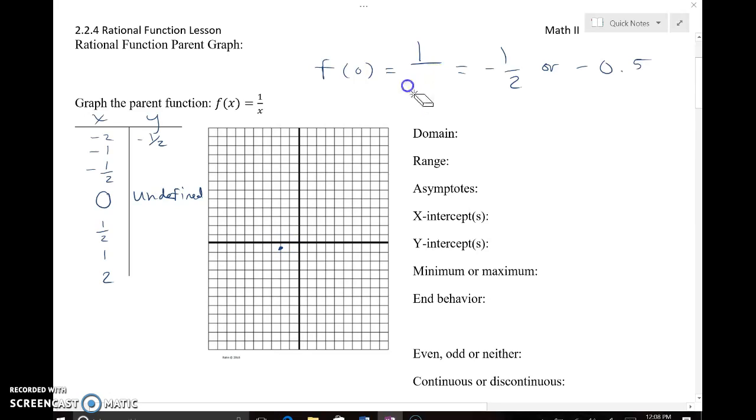Next, I'm going to substitute in negative 1. And so 1 divided by negative 1 is just negative 1. So when I go to graph that, that's left 1, down 1.